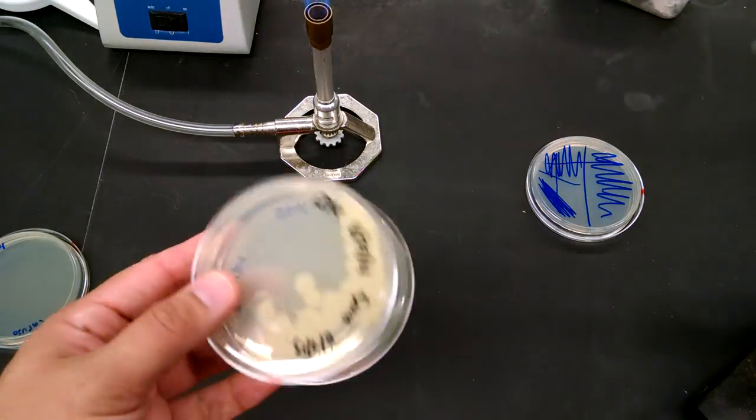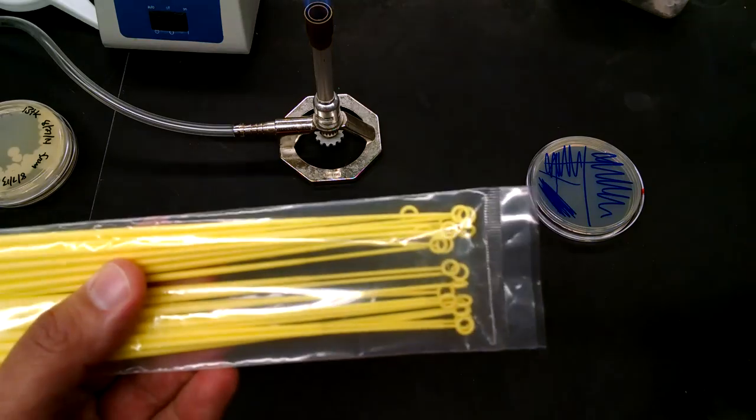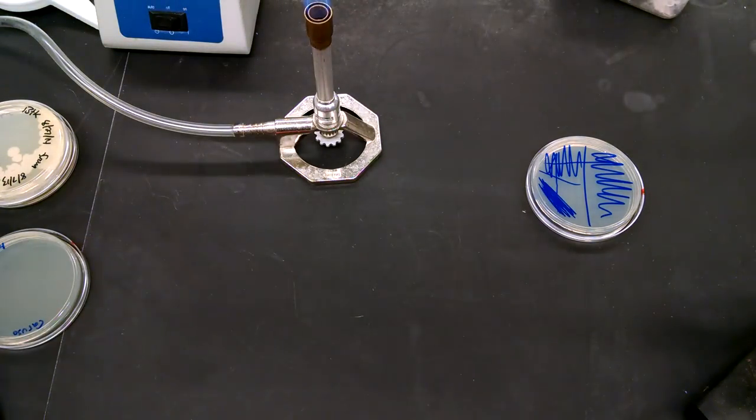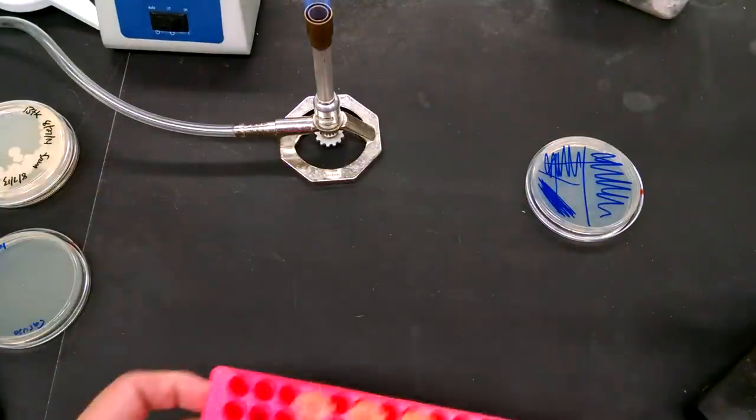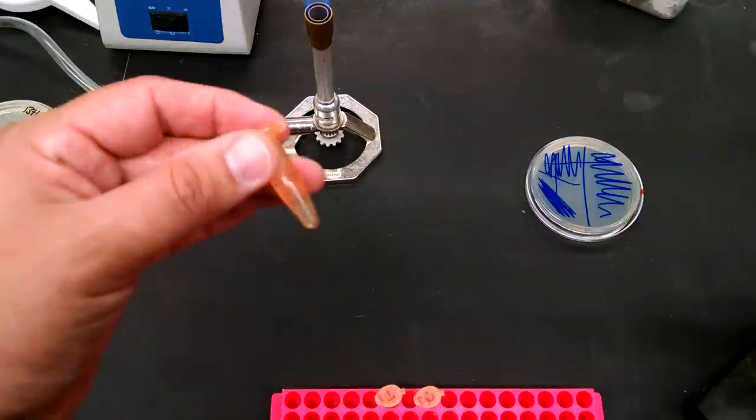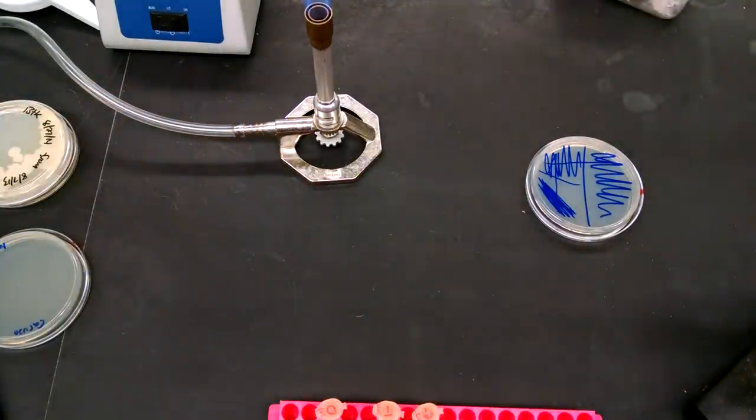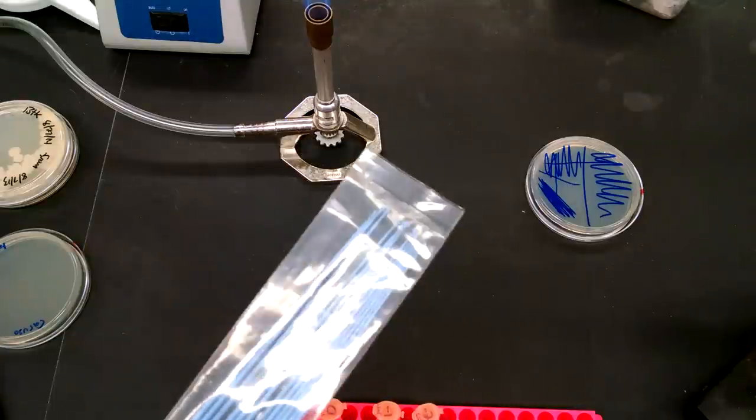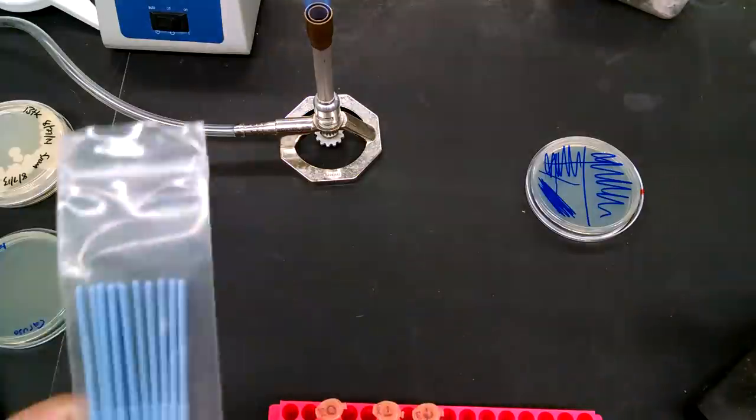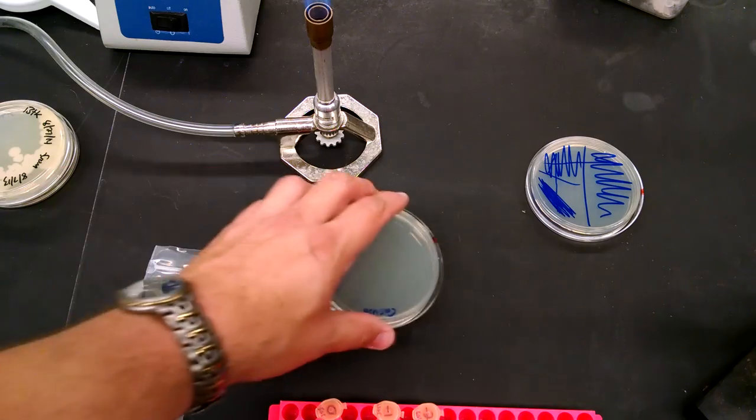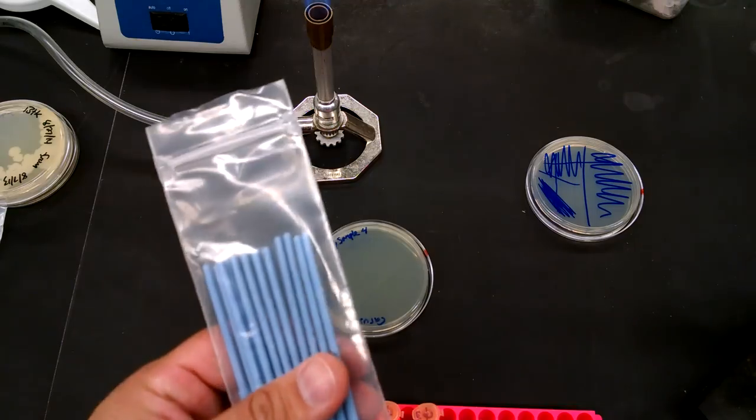But sometimes, especially in the Phage Hunters lab, you're going to need to streak from liquids. And then you can use these if you have a lot of liquids, say maybe you're streaking from a tube like this. Or sometimes you may be streaking from a tube like this where you can't get very far into the tube or it's way down in there. Then we have smaller loops that you can use. When you're doing your initial tests and you only have 100 microliters in the tube, these yellow loops don't reach all the way down to the bottom. We have these blue loops.